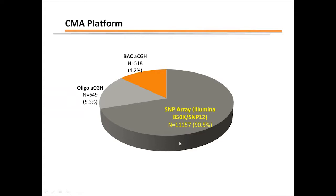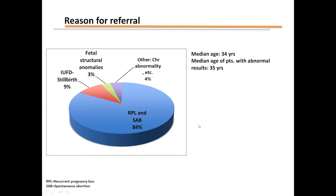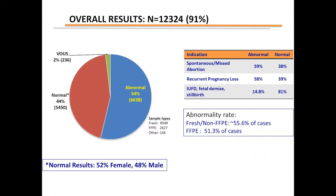Most of our samples over this period were evaluated by SNP-based Illumina microarrays — both the 850K and the CytoSNP12. The reasons for referral fell into expected groups: recurrent pregnancy loss and spontaneous abortions encompassed over 80% of the samples, and close to 10% were from stillbirth or intrauterine fetal demise. The median age for our patients was 34 years, and slightly above that for patients whose samples yielded abnormal results.